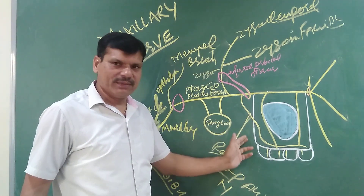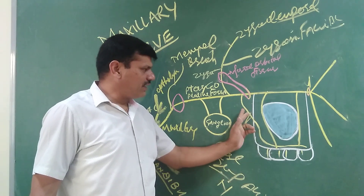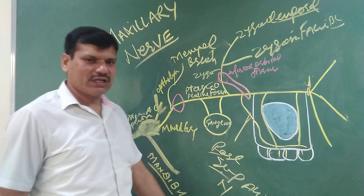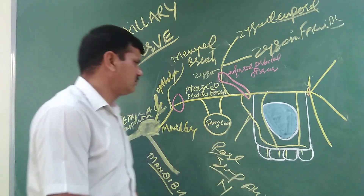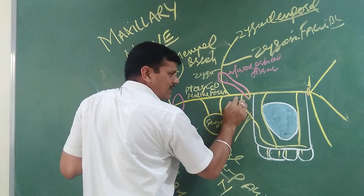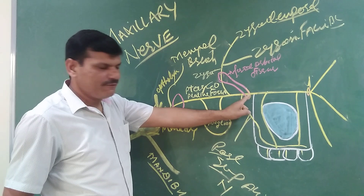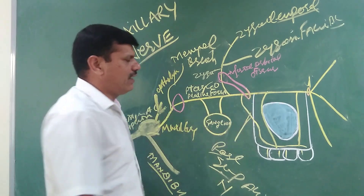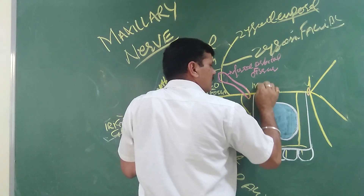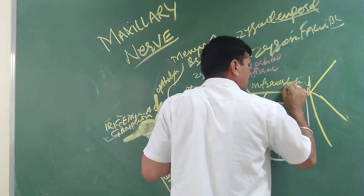The posterior superior alveolar nerve passes at the posterior wall of the maxilla and supplies to the molar teeth. Then the maxillary nerve passes through the inferior orbital fissure and lies in the floor of the orbit, where it is known as the infraorbital nerve.